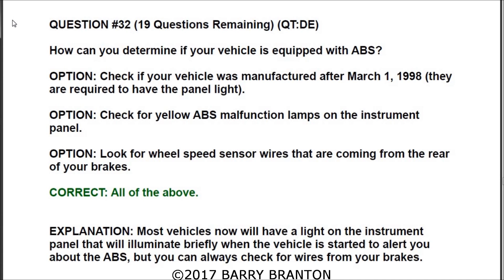Question number 32: How can you determine if your vehicle is equipped with ABS? In this particular situation, all of the answers are correct. Check if your vehicle was manufactured after March 1st, 1998 — they are required to have a panel light. Check for yellow ABS malfunction lamps on the instrument panel. Look for wheel speed sensor wires coming from the rear of your brakes. Most vehicles now will have a light on the instrument panel that illuminates briefly when the vehicle is started to alert you about the ABS.